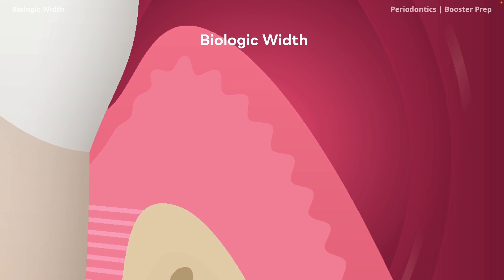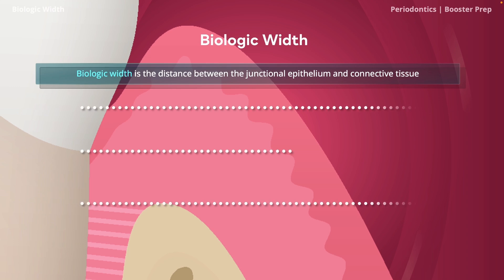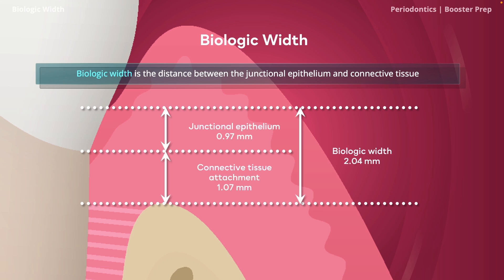The next important concept is biologic width, also referred to by a newer term: supracrestal tissue attachment. Biologic width is the distance between the epithelial attachment at the base of the sulcus and the underlying connective tissue to the alveolar crest — on average around 2 millimeters. Teeth require at least 2 mm of biologic width. If the biologic width is invaded, it can cause inflammation and damage to the periodontium.